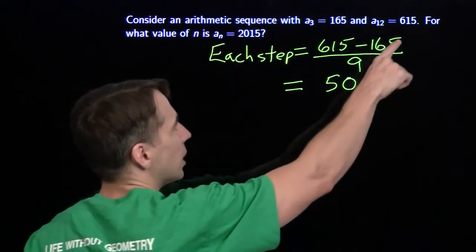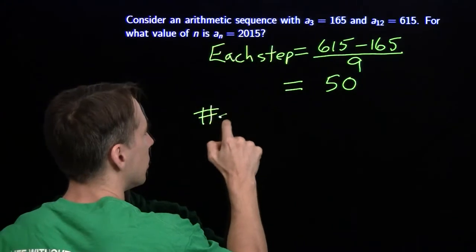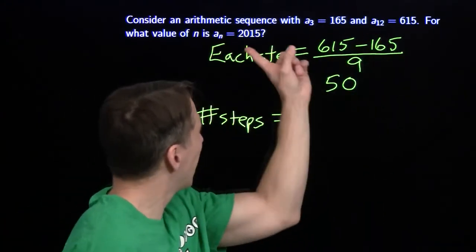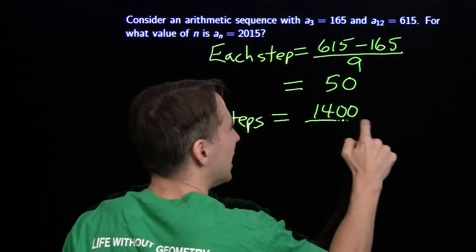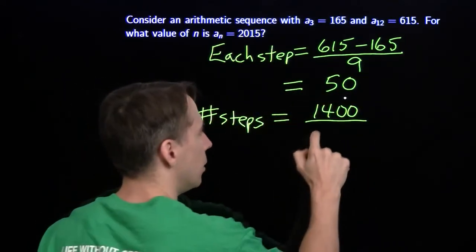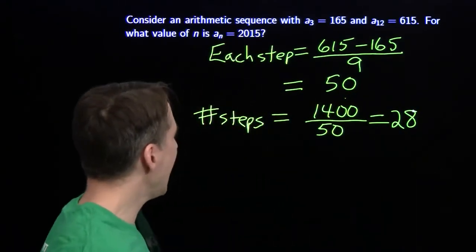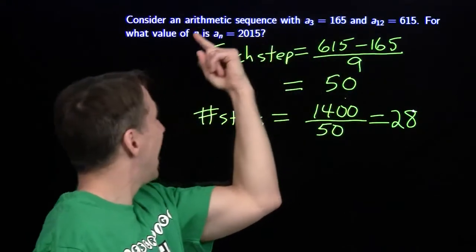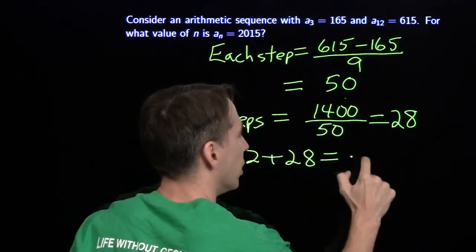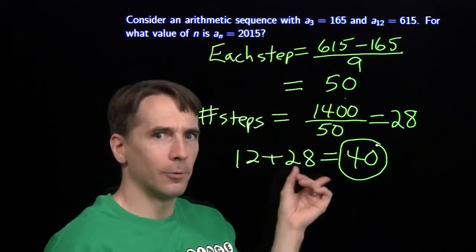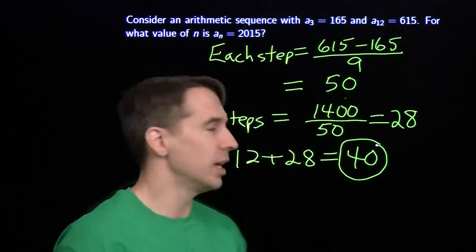Now we'll figure out n by looking at how far we go from 615 out to 2015. We need to cover a distance of 1400, and each step has length 50, so we divide: 1400 divided by 50 is 28 steps. So we take 28 steps from the twelfth term out to the fortieth term — n equals 40. Doing the problem two apparently different ways and getting the same answer is a great check that you're correct.